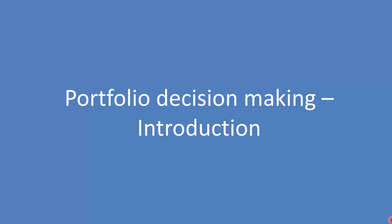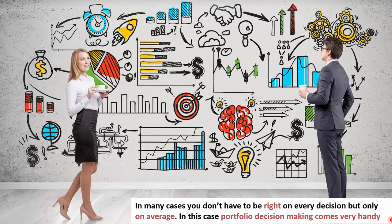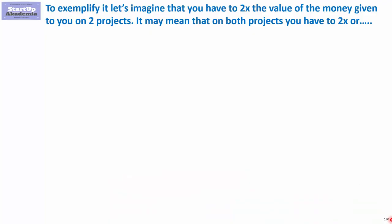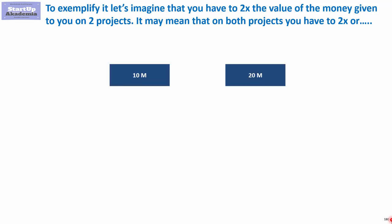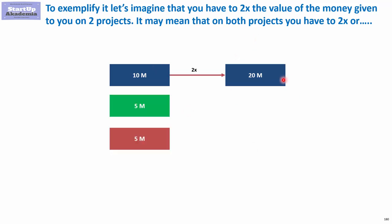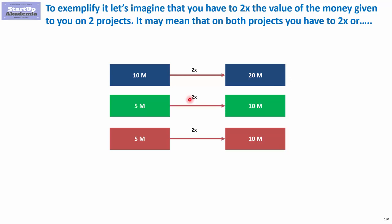Portfolio decision making introduction: in many cases you don't have to be right on every decision, but only on average. Portfolio decision making is very handy for this. To exemplify, let's imagine that you have 10 million and you want to double its value, going from 10 to 20 million, and you have two projects that you have invested in.